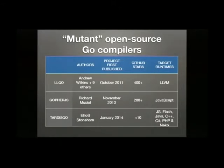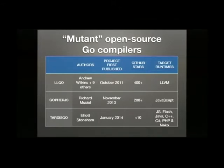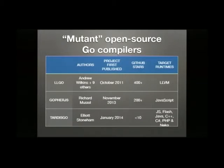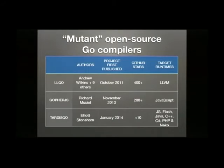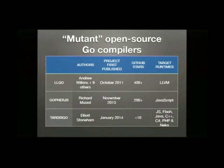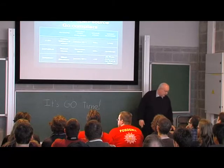The mutant Go compilers: LLGo targets the LLVM architecture, written largely by Andrew, who is in Australia at the moment, sadly. Go4JS targets JavaScript, and it's written by Richard. And my own TardisGo targets seven different target environments. As you can see, they've been around for various lengths of time — mine for the shortest, and LLGo for the longest, which is why it's got so many contributors.